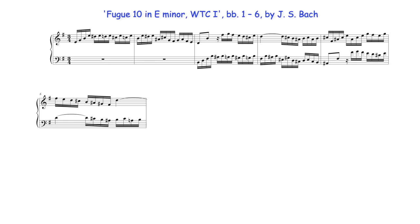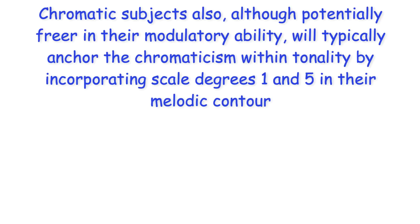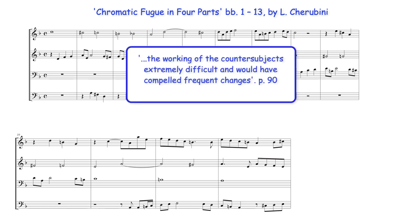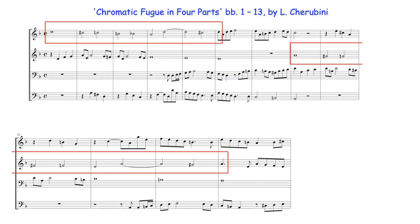Here also, within the contour of the real subject, scale degrees one and five in the key of E minor are then replicated in the dominant B minor. Chromatic subjects also, although potentially freer in their modulatory ability, will typically anchor the chromaticism within tonality by incorporating scale degrees one and five in the melodic contour. In this chromatic fugue subject by Cherubini, for example, although originally planned to use a tonal answer, Cherubini decided that this would have made the working of the counter-subjects extremely difficult and would have compelled frequent changes. He therefore uses a real answer in the final work.